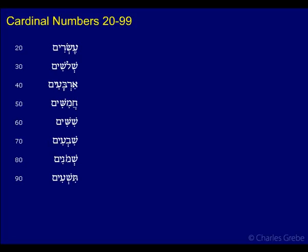Cardinal numbers 20 through 99 — let's look at our tens and tens combined with units like 21 or 31. How do we do those in Hebrew? Here are the tens. The number 20, the cardinal number, is Esrim — this is the plural of Esser, the plural of 10. And 30 is Shilashim, which is the plural of 3.